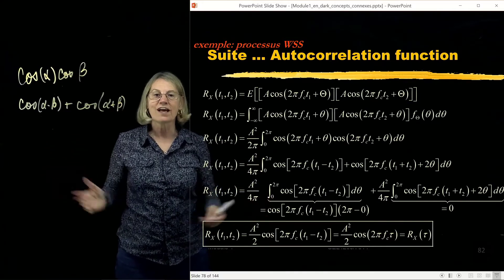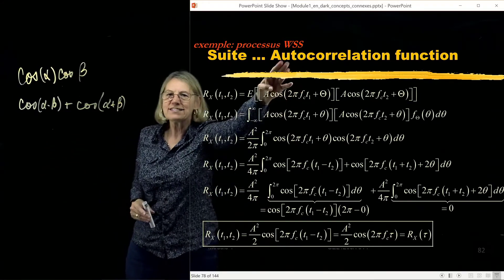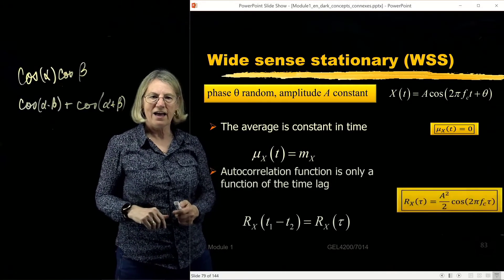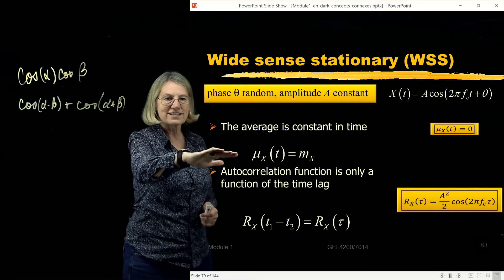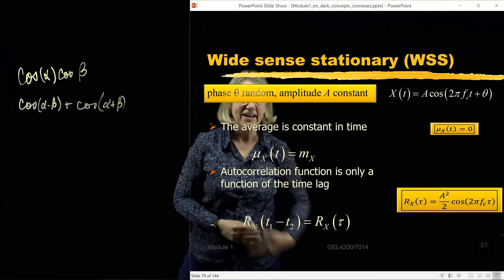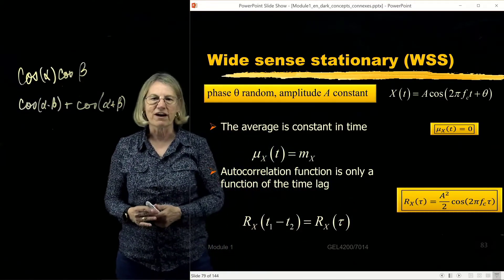And so essentially this autocorrelation function is only a function of the lag τ. So I have established that it is indeed a wide sense stationary process. So the first criteria was that it was constant in time, and we saw it was 0. Second criteria was a function only of the lag, and that was indeed what we found.